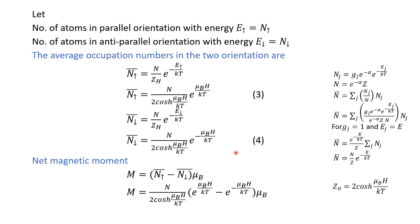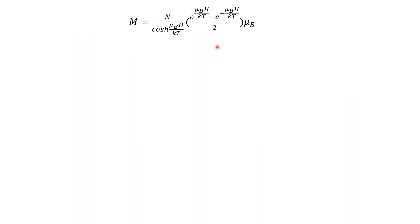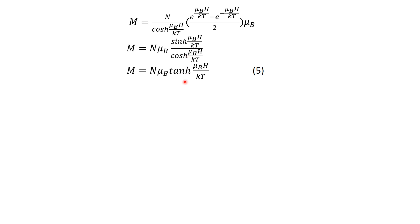The net magnetic moment is the difference between the magnetic moments of atoms in the up and down states. Subtracting the number of atoms in the down state from those in the up state and multiplying by μ_B gives the net magnetic moment. Bringing the half out, this becomes the hyperbolic sine of (μ_B H / kT), and since sine over cosine is tangent, we can write: M = Nμ_B tanh(μ_B H / kT). This is the formula for net magnetization.